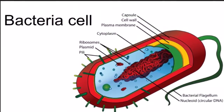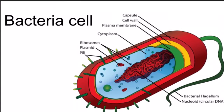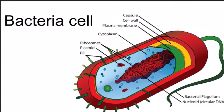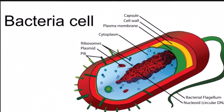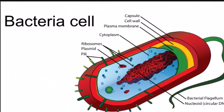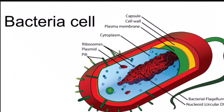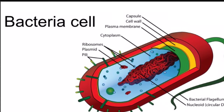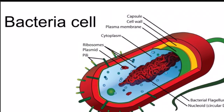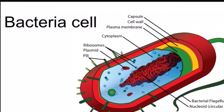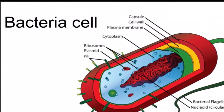This is a picture of a bacteria cell. The organelles include cytosol, cytoplasm, cell wall, single chromosome DNA, ribosomes, plasmid, plasma membrane, flagella, nucleoid, capsule, and pili.